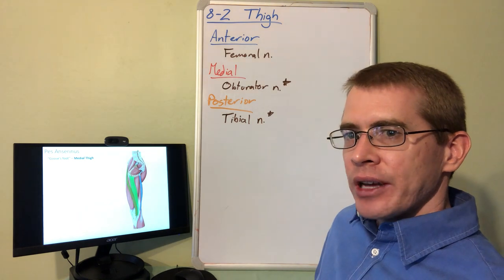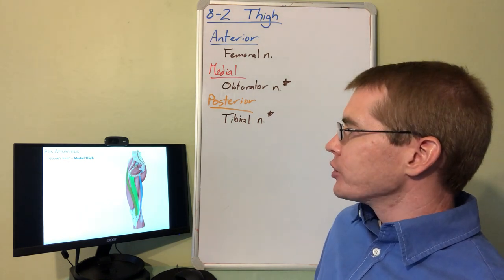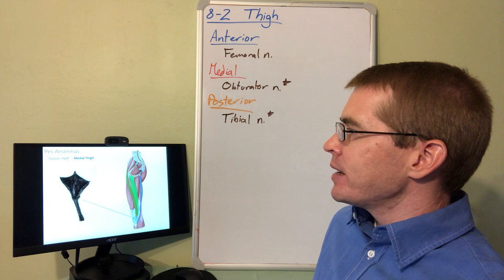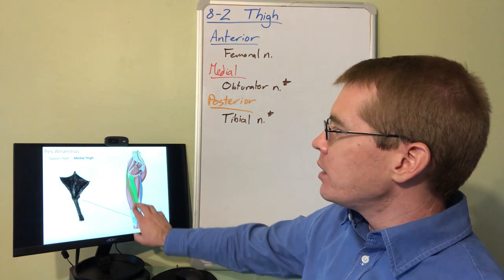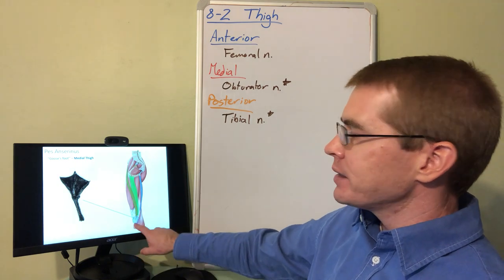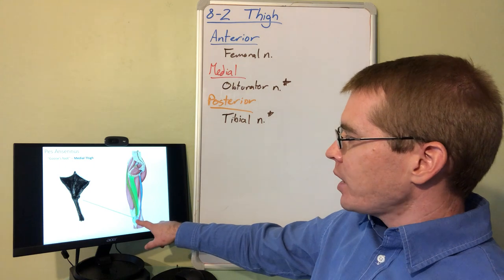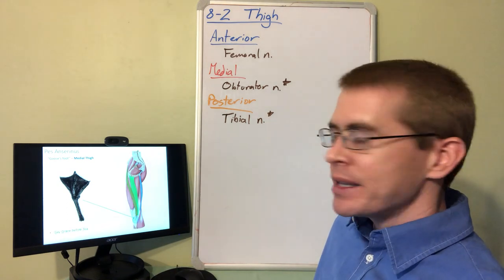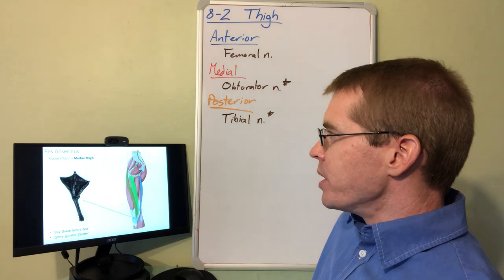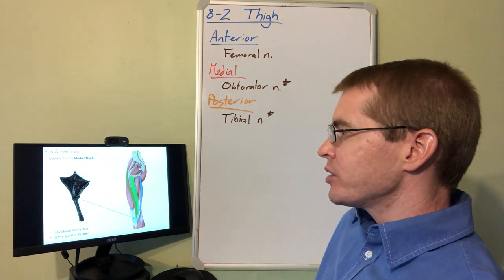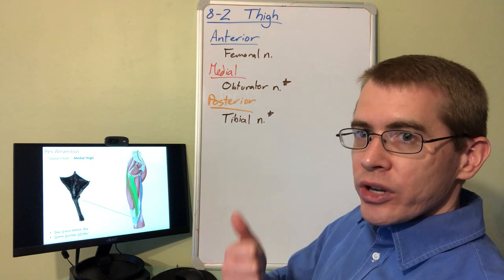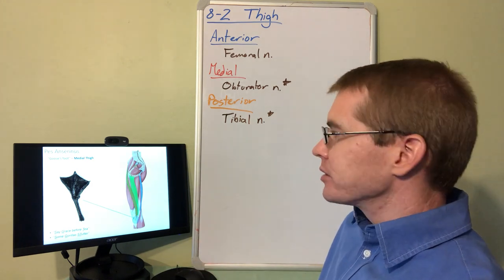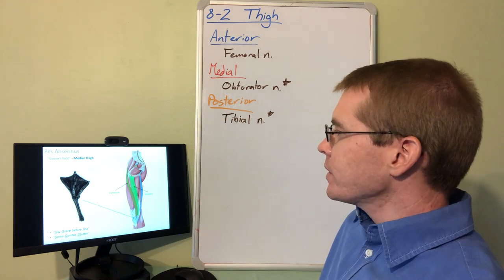There are some other important landmarks we need to name and be aware of. The first is the pes anserinus in the medial portion of the thigh. Pes anserinus gets its name from the goose's foot. We have three muscles on the medial portion of the thigh that attach to the same tendon at the knee. The acronym to remember the muscles that compose pes anserinus is "some gorilla's stutter." That stands for sartorius, gracilis, and semitendinosus.